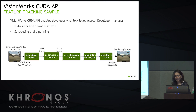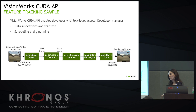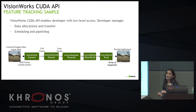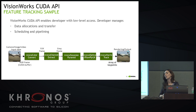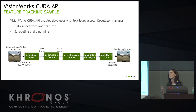In addition to OpenVX, we also give direct access to CUDA kernels. These are the same OpenVX API kernels, but you can directly call the CUDA kernels themselves. In this case, you have to manage data allocations, data transfer between CPU and GPU, and scheduling and pipelining yourself. It's much more challenging, but if you are an advanced CUDA developer, you can achieve almost similar performance to graph mode.